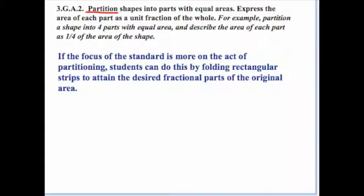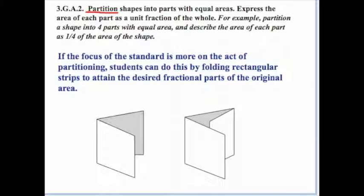If the focus of the standard is more on the act of partitioning, students can do this by folding rectangular strips to obtain the desired fractional parts for the original area. For example, take a rectangular strip of paper and fold it in half to get two equal parts. Then fold it in half again to get four equal parts, and in half again to get eight equal parts. Students could also do a tri-fold to get three equal parts, then fold that in half — either horizontally or vertically — to get six equal areas.